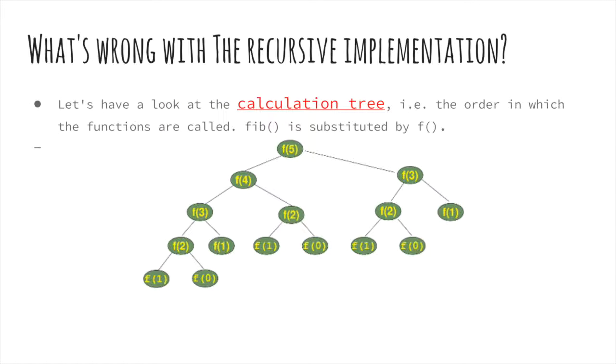Here we have a calculation tree. Fib is substituted by F for simplicity. We can see that subtree F2 appears three times and the subtree for F3 appears two times. If you imagine extending this tree for F of 6, you'll understand that F of 4 will be called two times, F of 3 will be called three times, and so on.